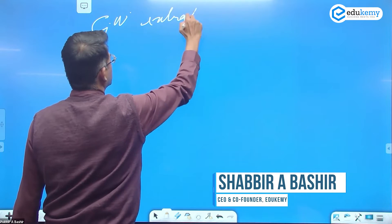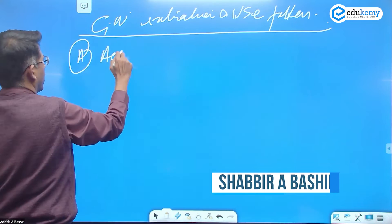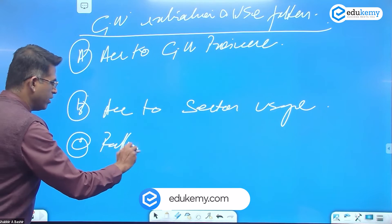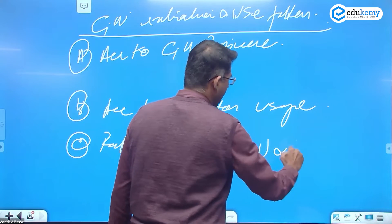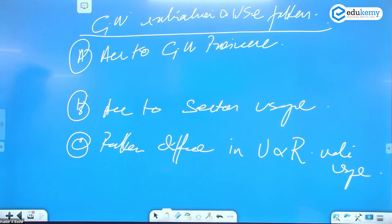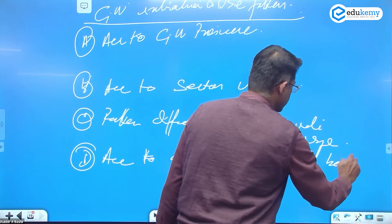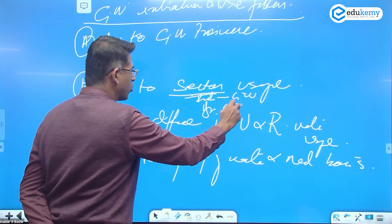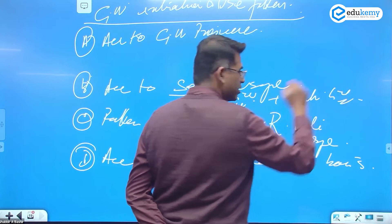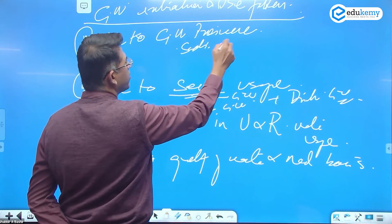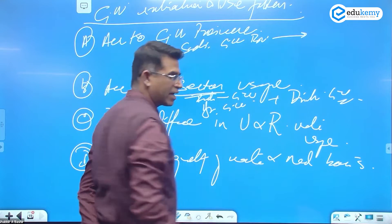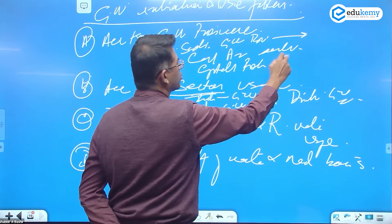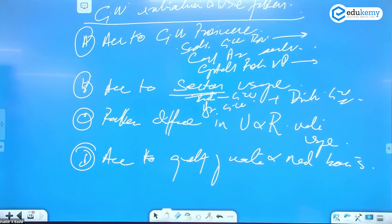Groundwater extraction and use patterns can be analyzed according to groundwater provinces, sectoral usage patterns, and differences in urban and rural water usage. You can discuss industrial groundwater use, agriculture groundwater use, and drinking water usage by region — how extraction happens in sedimentary basins, coastal areas, and crystalline rock plateau regions, and where groundwater is dependable and where it is not.